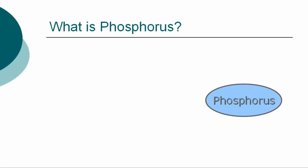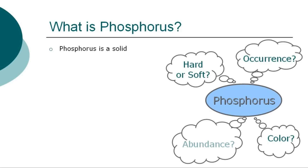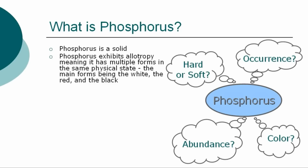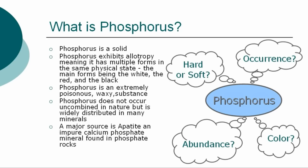What is Phosphorus? In a general overview of the element, we can describe Phosphorus as a solid. It exhibits allotropy, meaning it has multiple forms in the same physical state. The main forms of Phosphorus are the white, the red, and the black. Phosphorus is an extremely poisonous, waxy substance which does not occur uncombined in nature, but is widely distributed in many minerals. A major source of Phosphorus is apatite, which is an impure calcium phosphate mineral found in phosphate rocks.